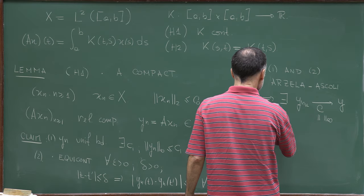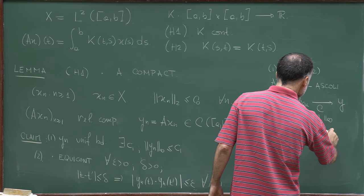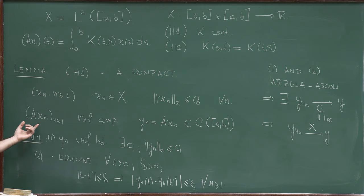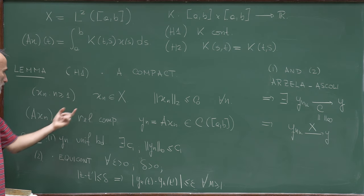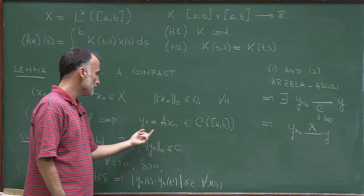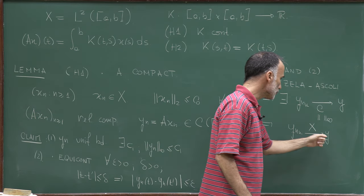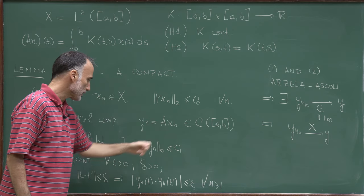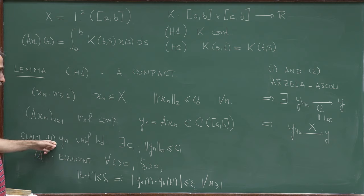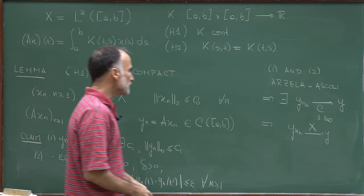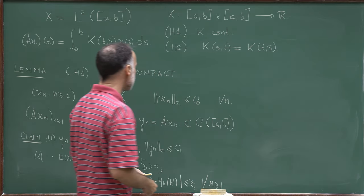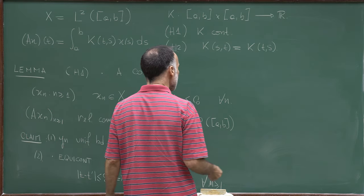Uniform convergence implies L2 convergence, so yₙₖ converges to y in L2 norm. Therefore A is compact, since from any bounded sequence {xₙ} we extracted a subsequence {xₙₖ} such that Axₙₖ = yₙₖ converges in L2. What remains is to verify uniform boundedness and equicontinuity of {yₙ}.